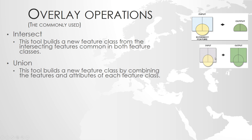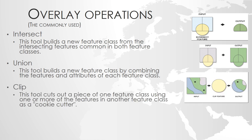When you do a union, you will have your two input layers, and the result will be whatever is covered by any of those two. There is something that might seem like an intersection, namely the clip tool. The clip tool takes an input layer and a clip layer, similar to the two layers of the intersection. The only difference is that the output layer only contains the information from the input layer, not the clipping layer.